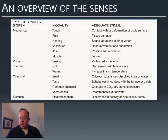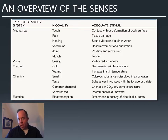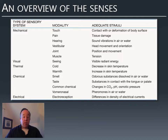So touch, pain, and the position of your body are mechanical senses. We have our visual sense for detecting light, thermal senses for detecting heat and cold, chemical senses — our sense of smell and taste, where we're detecting the presence of chemicals. And some animals, not us, have an electrical sense where they can actually detect electrical fields. Humans cannot do this, but I'll talk briefly about that in a moment.